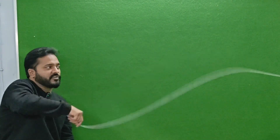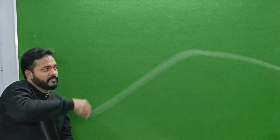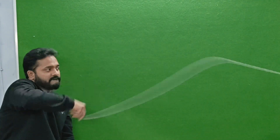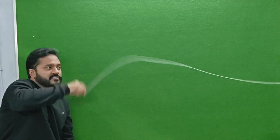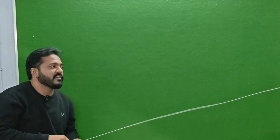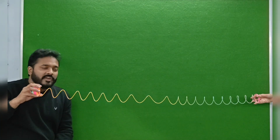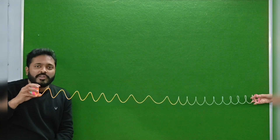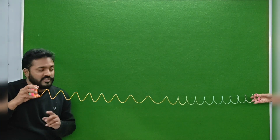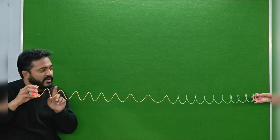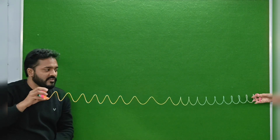For the time being, just focus on this wave. This is an example of a transverse wave where the wave is traveling perpendicular to the direction of disturbance. Next, we are demonstrating a longitudinal wave. In this case, the wave will be propagating in the direction of disturbance.